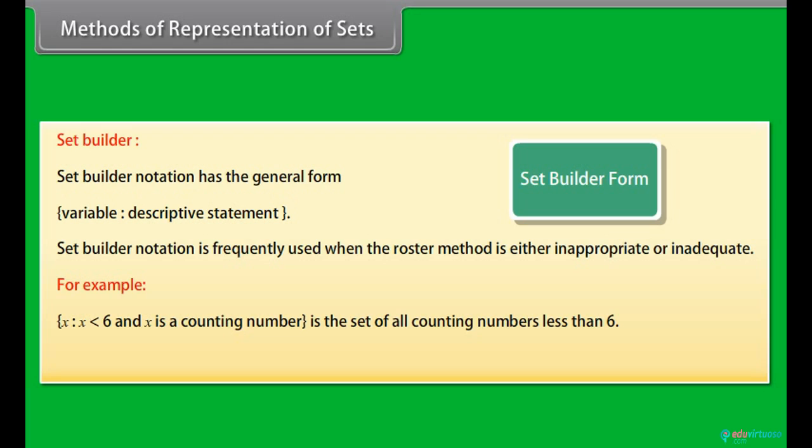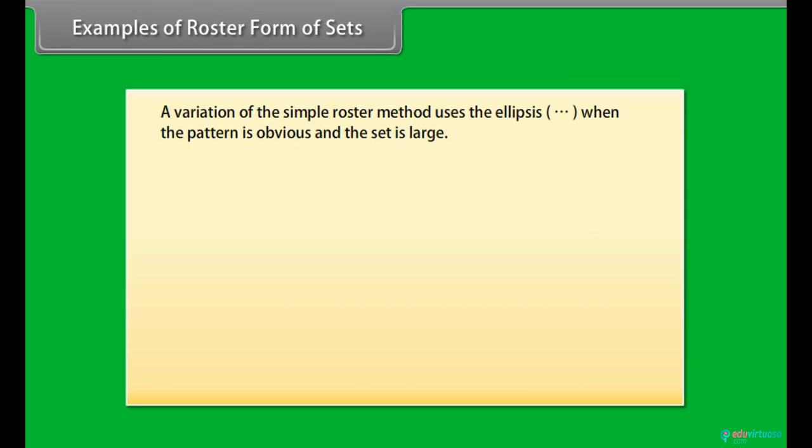For example, X such that X less than 6 and X is a counting number is the set of all counting numbers less than 6. Note this is the same set as 1, 2, 3, 4, 5.